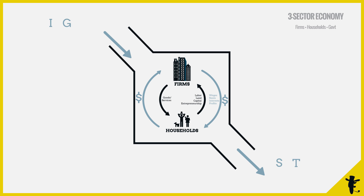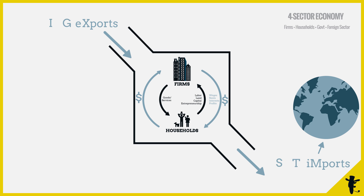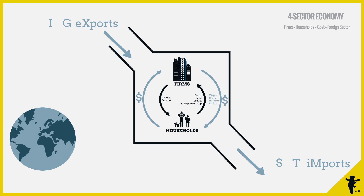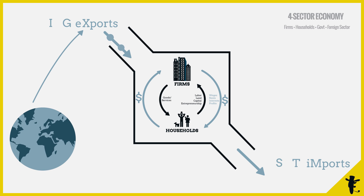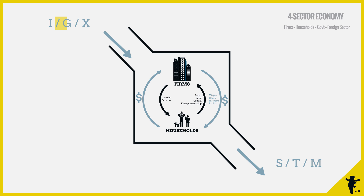Lastly, countries interact with one another. Imagine this is an American economy — let's add trade. America imports stuff; for example, America can import shoes from China. Shoes flow from China into America, and money spent on imports flows out of America into China. America exports too — America can produce software and export it to foreigners, so money flows from foreign countries into America. This is America's export earnings. Investments, government spending, and export earnings are called injections, because money is flowing in.